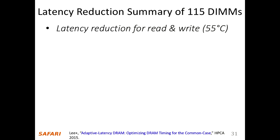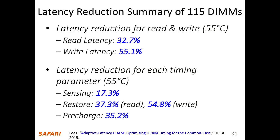In terms of impact on system performance: the timing parameters were set to the reductions found for a given DIMM at 55°C. The results are averages across 115 DIMMs - there is large variation across chips, where some DIMMs show only a 5 percent reduction in sensing latency while others show 30 percent. The evaluation was done by changing timing parameters statically, similar to what hardcore gamers do when overclocking DRAM in BIOS.